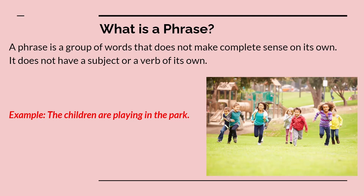In this sentence, the words 'the children are playing' form a complete sentence — the full meaning is coming out, it has a subject and verb. Children is the subject and 'are playing' are the verbs. But what about the words 'in the park'? 'In the park' gives extra information. It is a group of words without a subject or verb of its own — added to the main sentence to give more information.